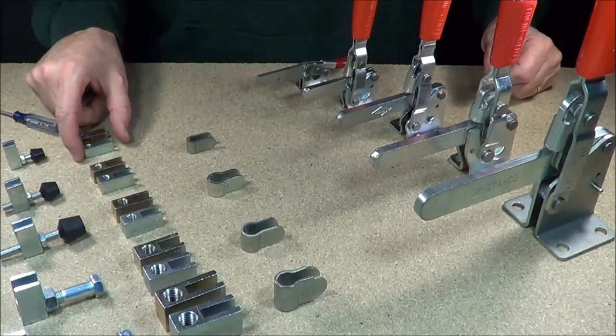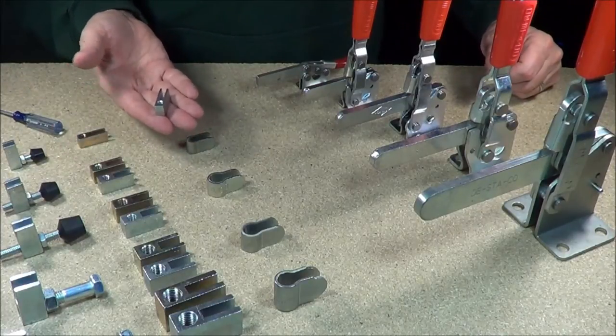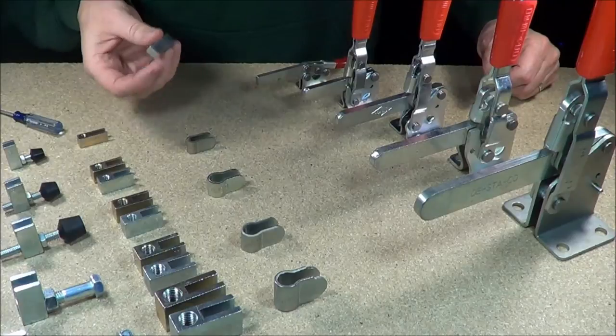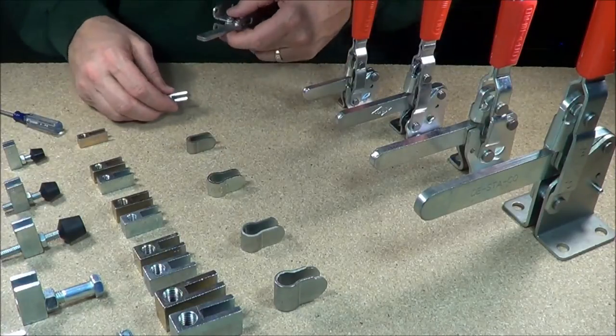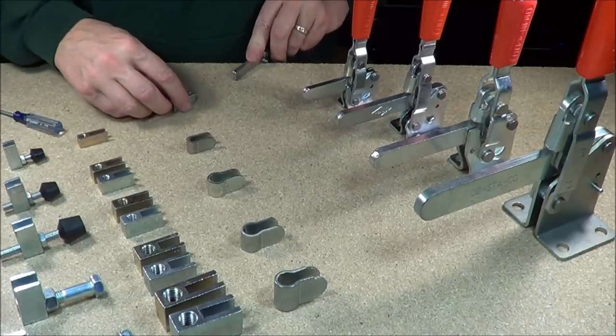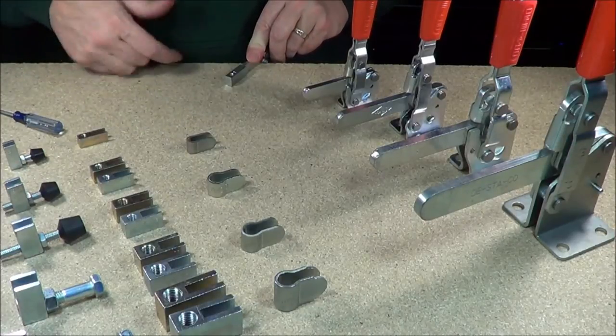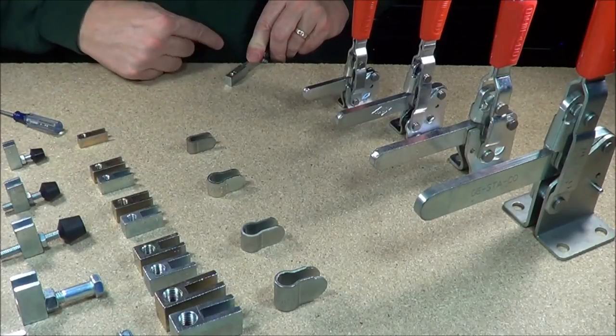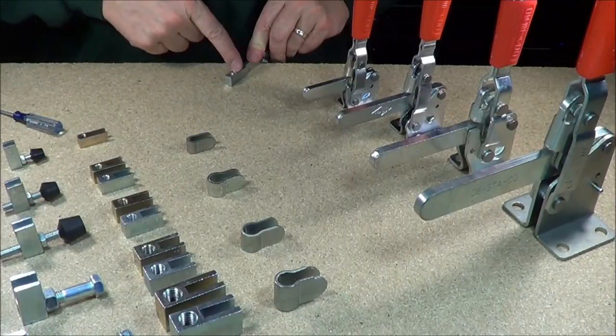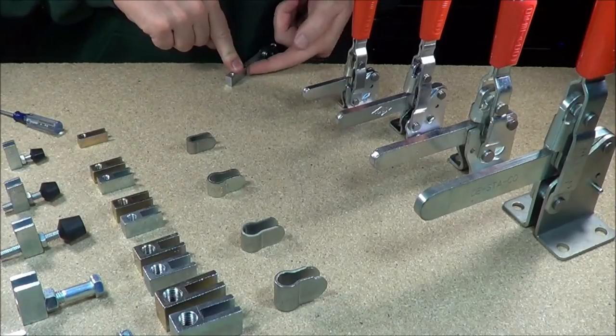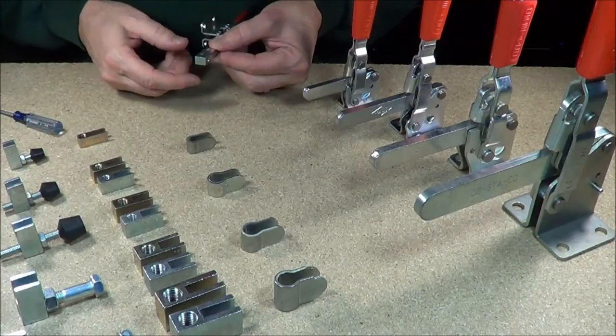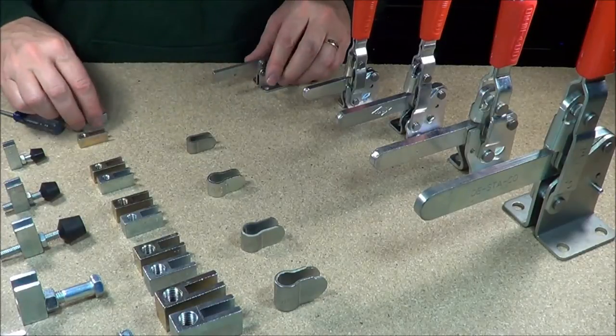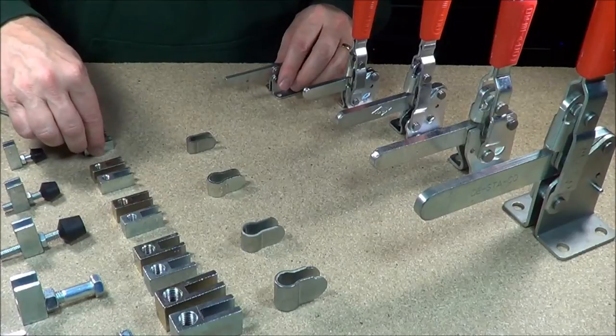But basically what this does is by having this threaded all the way through, it allows you to do a couple things. When you go to put it on, you can put this right on the table, you can put this right up to there, and it lines up perfectly. You just shove it right all the way up to the front there. Hold it down, tack it on this side, weld, weld, and you're done. Basically that makes it very easy for you to apply and align.